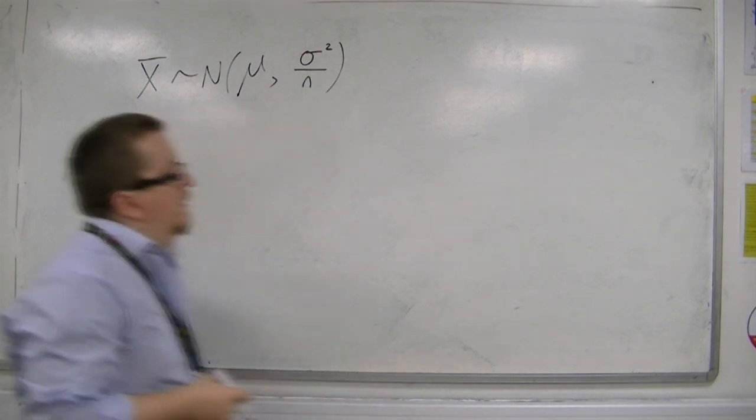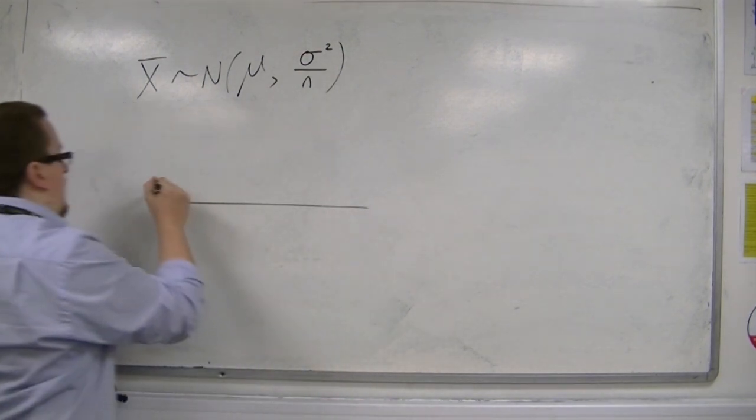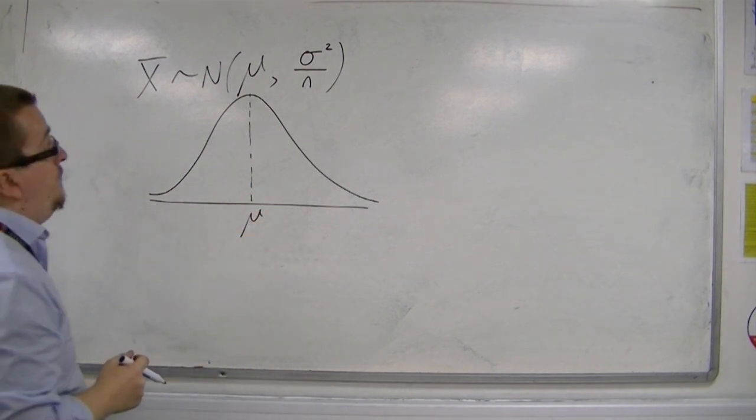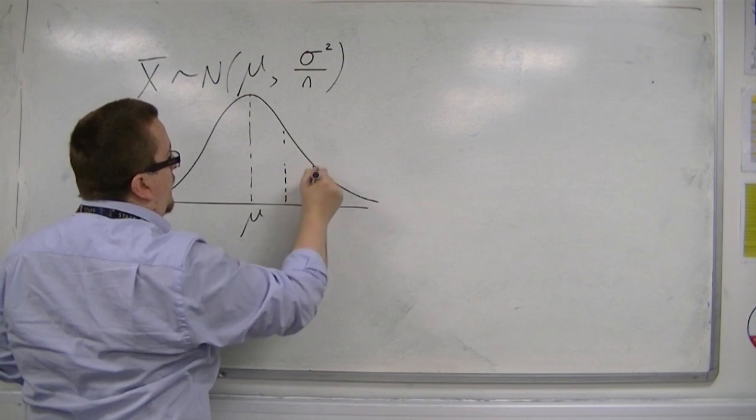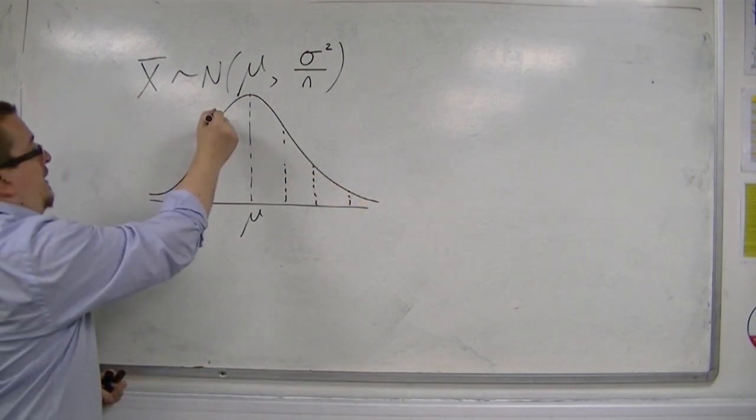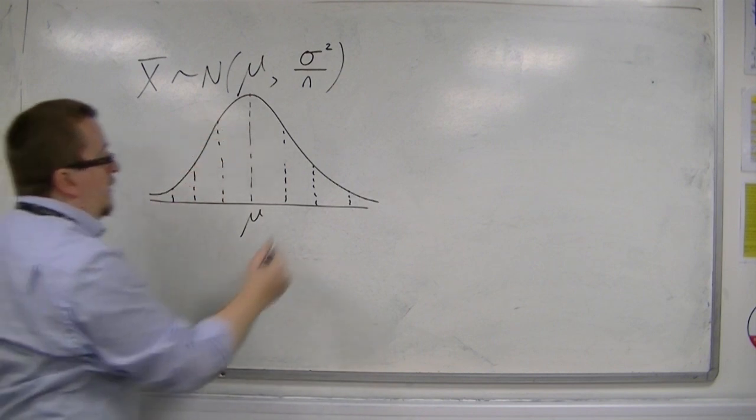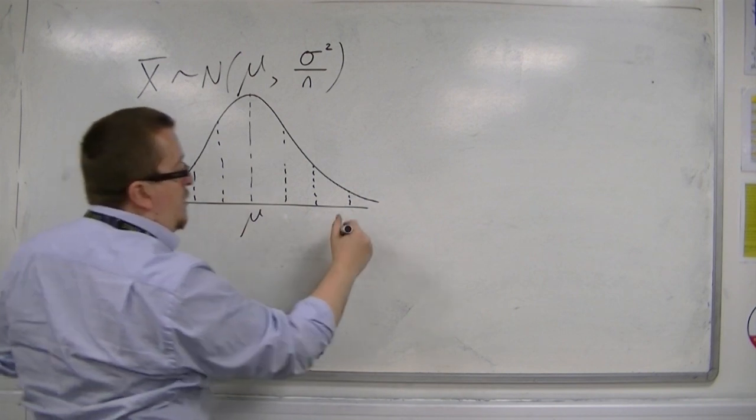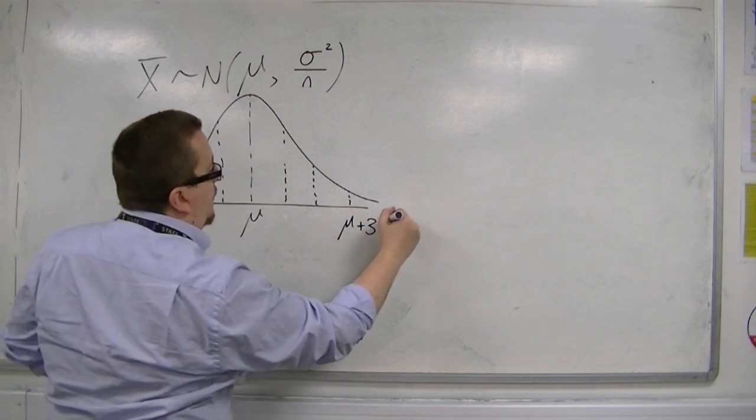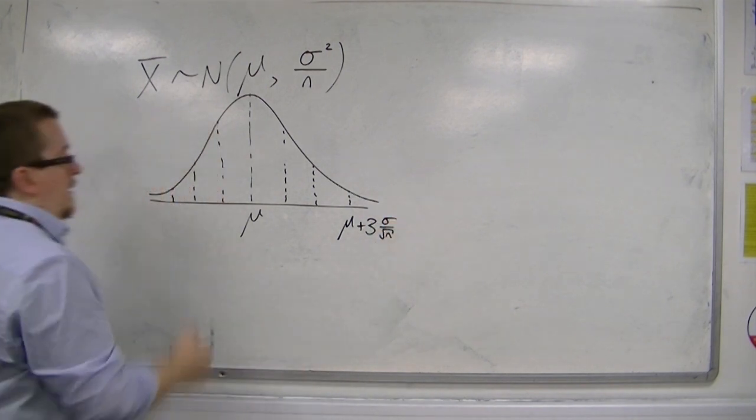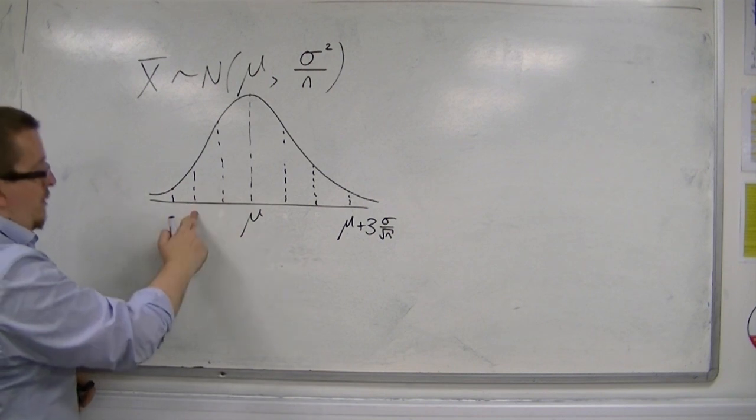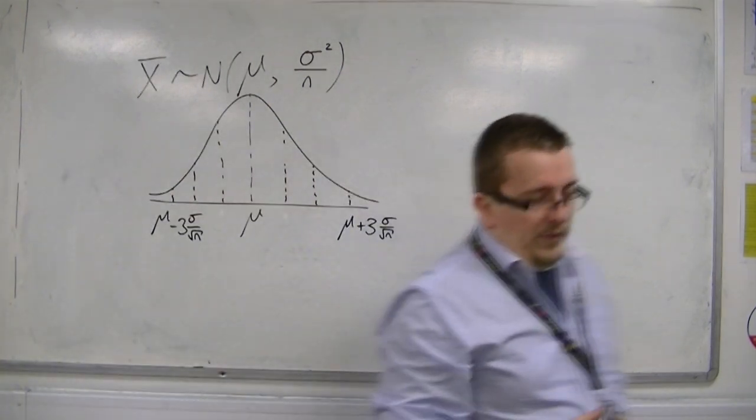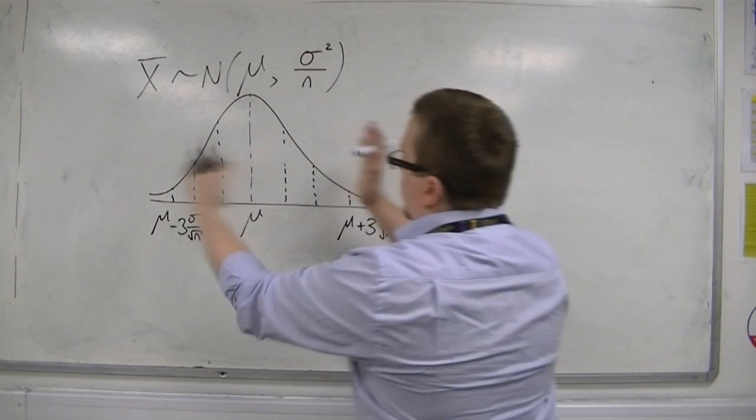That means that what we're considering here is a bell curve with a mean mu. And then, as we did in the first video on normal distribution, we can split the bell curve up. We've got mu plus one set of the standard error, mu plus two lots of the standard error, mu plus three lots. And this would be mu take away one lot of the standard error, two lots of standard error, then three lots of the standard error.